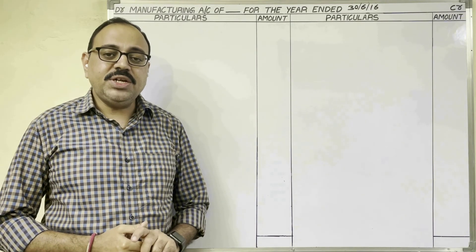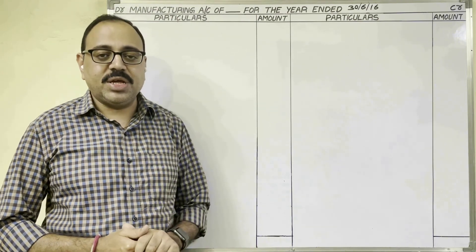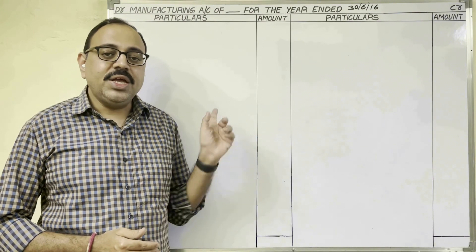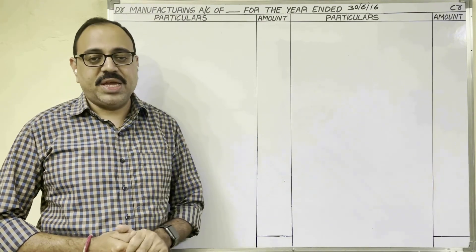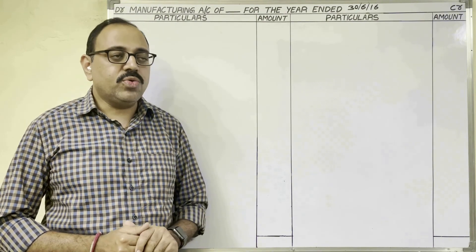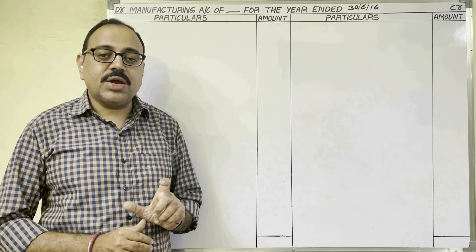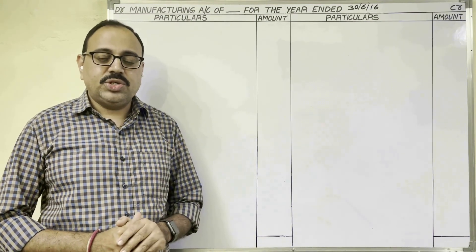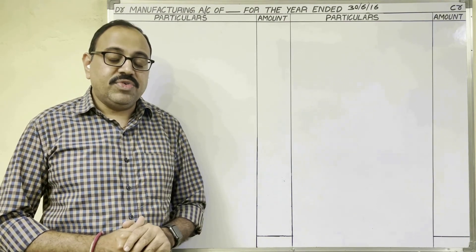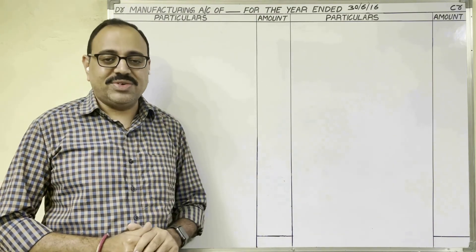Hello students. In this video I am going to explain about the third problem from the final account chapter. I am making this video for degree students, taking this question from Kalyani Publications, authors Jain and Narang. In this problem we are going to learn about manufacturing account. I made one video about manufacturing account, and the link is given in the description box and icon. First you have to watch that video, then only we will understand this problem.